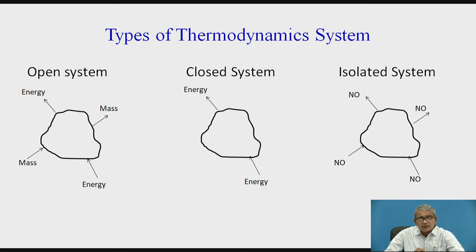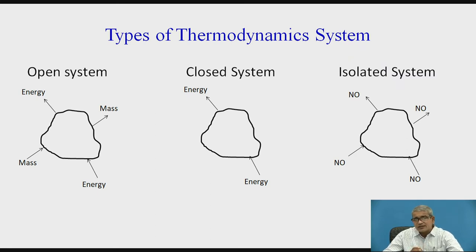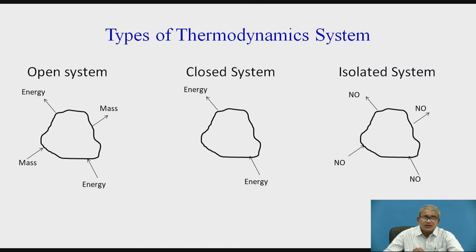Open system means in the open system, both energy and mass are transacted — from system to surrounding and surrounding to system. A simple example is the steam turbine. In the turbine, mass is entering and mass is leaving that system, and energy is transacted and removed from that system. That is a simple example of the open system — both mass and energy are transacted.